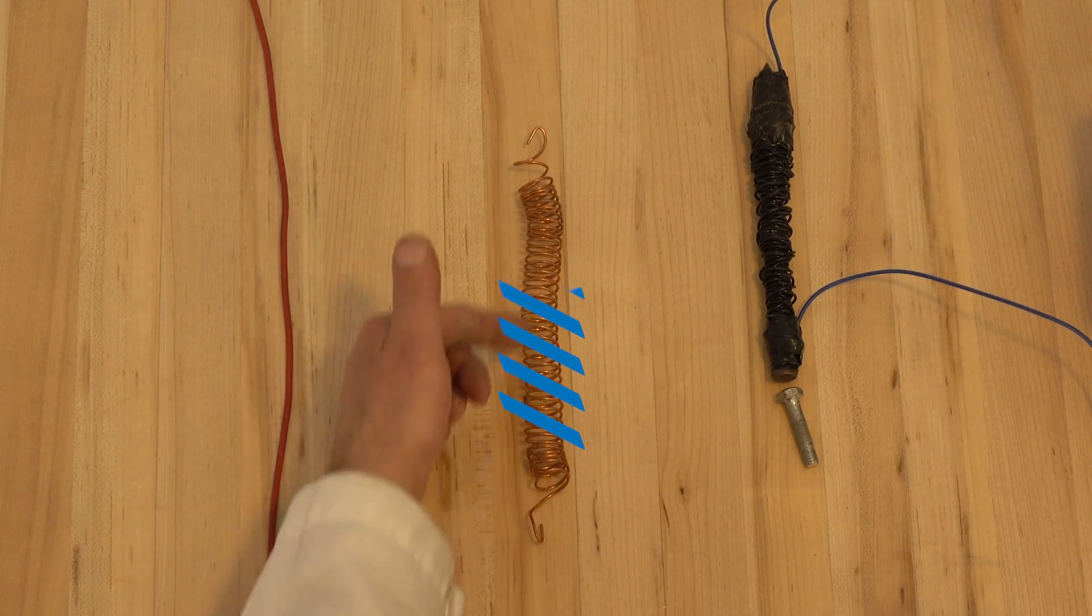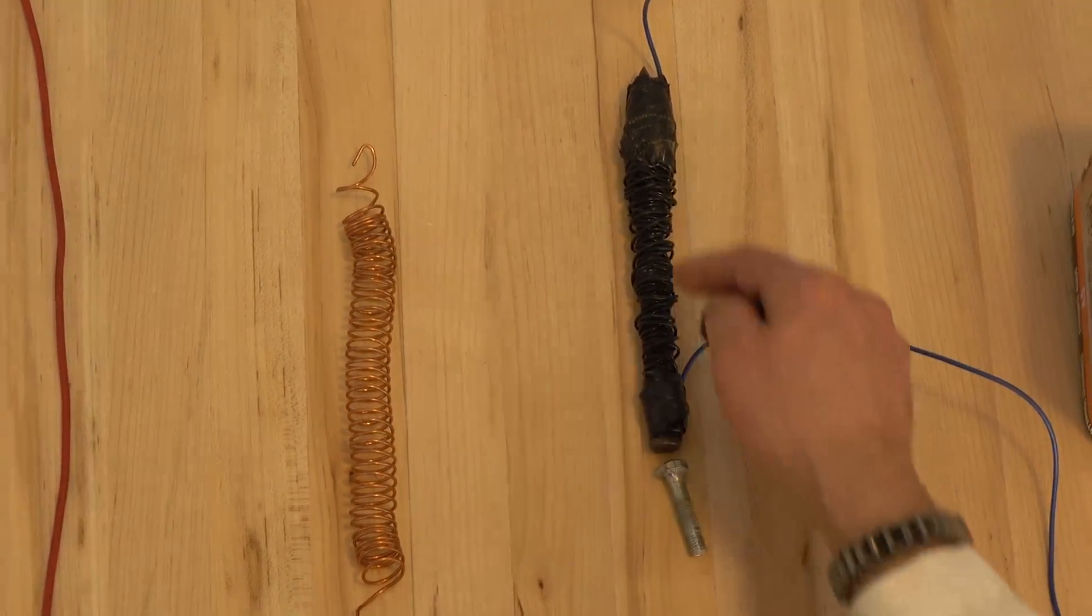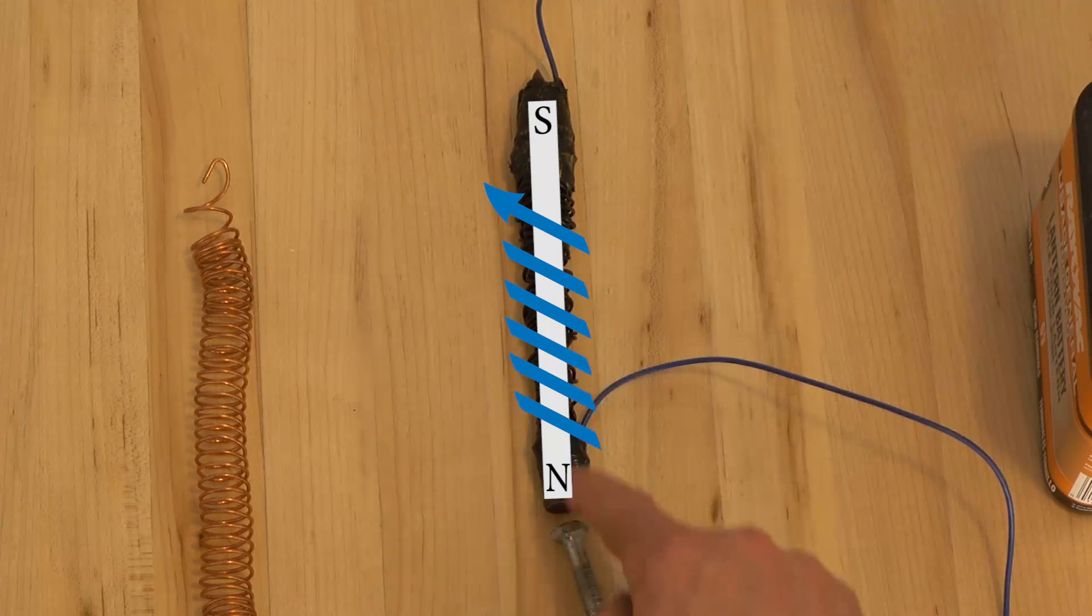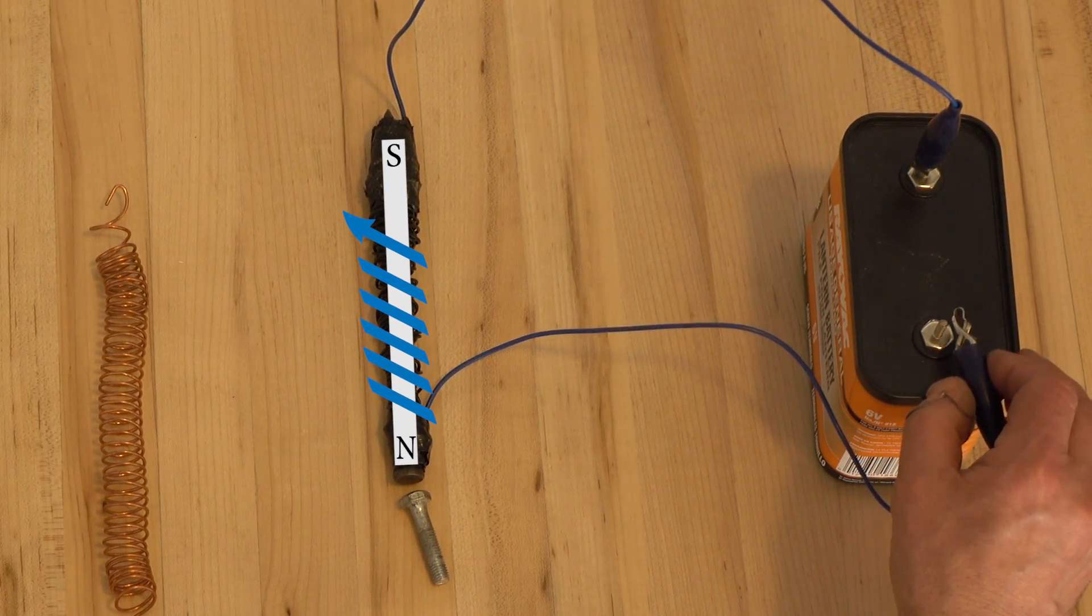If you coil up the wire then you increase that magnetic field. By placing an iron core within the coil you channel the magnetic field and create an electromagnet.